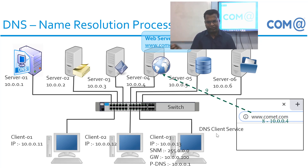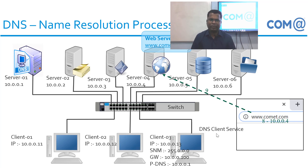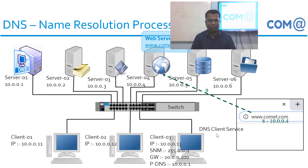After running ipconfig /flushdns, the DNS Client Cache is cleared, so the next name resolution request will go directly to the DNS server. From the client system, you can also verify whether the requested name is resolving correctly using the nslookup command. Using nslookup, you can query whether a record is available in the DNS server and proceed with troubleshooting accordingly. In upcoming videos, I will demonstrate how to configure the DNS server and how to troubleshoot DNS issues to help resolve problems in your production environment.